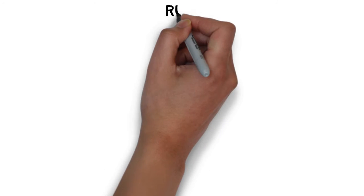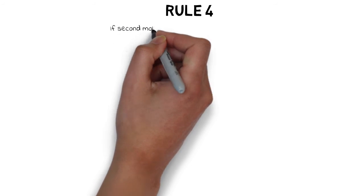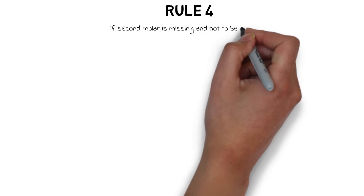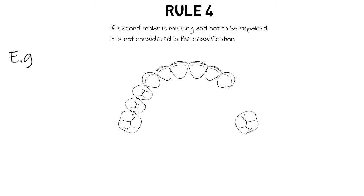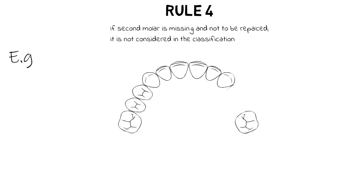Rule 4 states that if the second molar is missing and not to be replaced, it is not considered in the classification. For example, if the second and third molars are missing on both sides along with two premolars on one side, and there are no intentions of replacing the absent second molars, we do not include them in the classification and simply classify it as Class 3. The same logic applies if the second molar is absent on only one side.